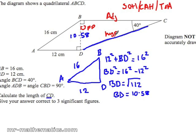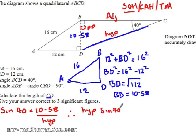The information we've got, we've got the opposite and the hypotenuse, so we'll use sine. So sine of the angle 40 is equal to the opposite which is 10.58 over the hypotenuse which we're trying to find. So multiplying both sides by the hypotenuse, the hypotenuse sine 40 is equal to 10.58.